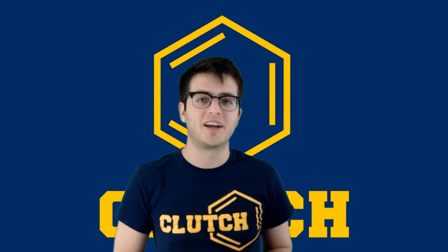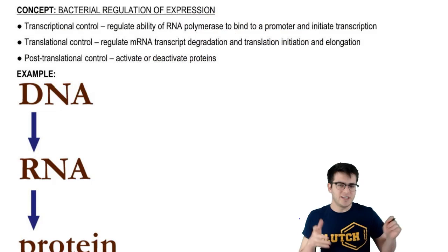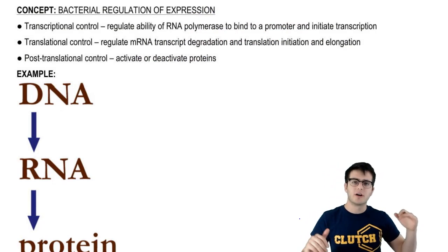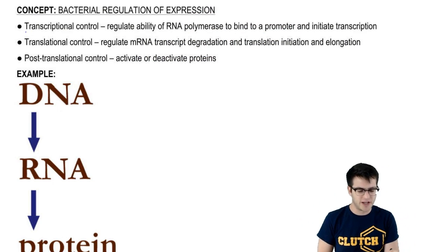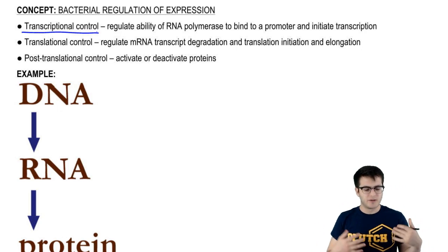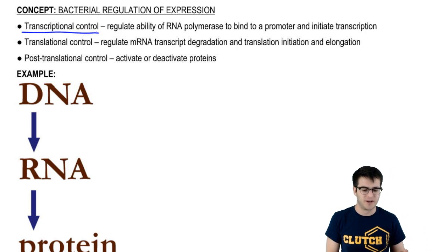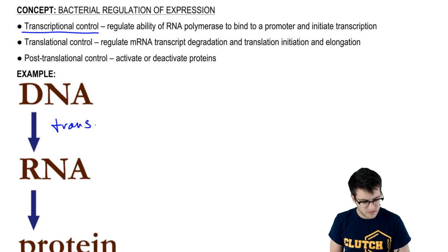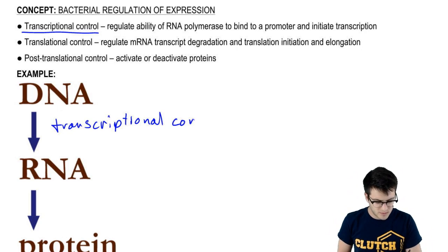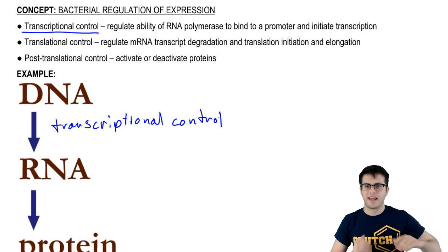In this video, we'll be talking about how bacteria regulate their gene expression. Regulation of expression can actually occur at multiple levels. There's the initial level of control, which would be transcriptional control — usually the regulation of the ability of RNA polymerase to bind to the promoter and initiate transcription. That's transcriptional control, and it governs the step between DNA and RNA in gene expression.